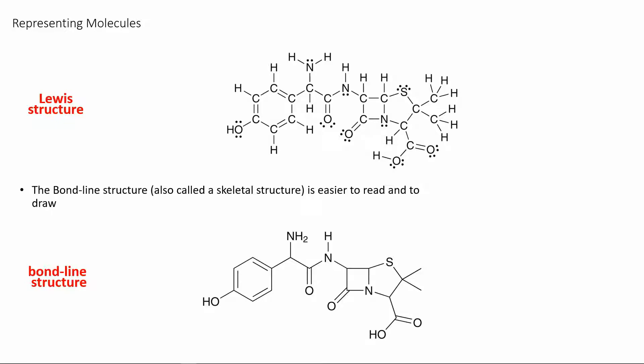The first method we looked at for representing a molecule is the Lewis structure. As you can see here, we have the Lewis structure for this compound, which is fairly complex, including many different atoms and lone pairs. We can compare that to the bond line structure at the bottom of the slide, where we have a much neater and more summarized version of the molecule. We're going to be using the bond line structure because of how much easier it is to draw and how much simpler the molecular structure looks.